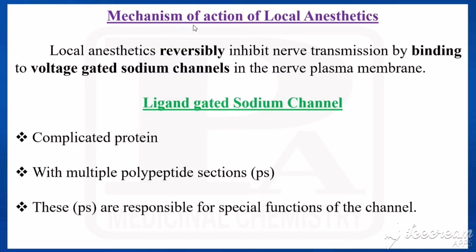Dear students, now we are going to see the mechanism of action of local anesthetics. Local anesthetics reversibly inhibit nerve transmission by binding to voltage-gated sodium channels. These channels are present in the nerve plasma membrane. The local anesthetics bind to the sodium channels present in the nerve plasma membrane, causing reversible inhibition of nerve transmission. Before going deeper, we first need to understand the sodium channel.